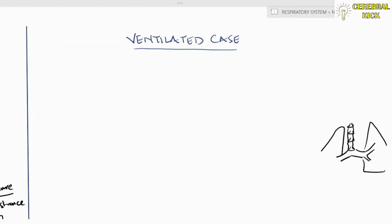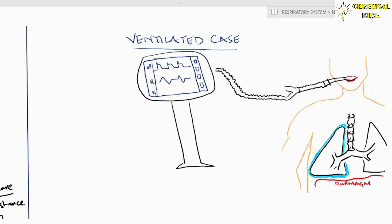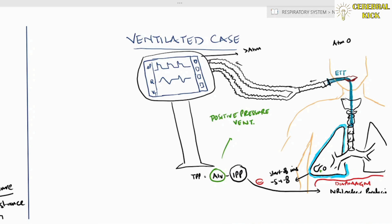Let's calculate the static and dynamic compliance of a ventilated case. The patient has an ETT and is connected to a ventilator. Through neuromuscular blockers the diaphragm is paralyzed, so intrapleural pressure will not change. To generate flow we increase pressure from above — this is positive pressure ventilation. The ventilator increases pressure above alveolar pressure of zero, establishing a pressure gradient and generating flow.